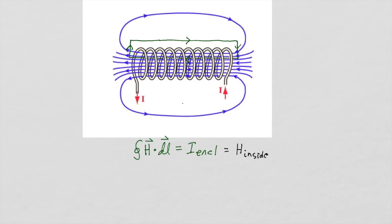Let's call the length of the coil L. When we're integrating the two ends, these path lengths are short and are pretty much perpendicular to the magnetic field, so H dot dL will essentially be zero and we can ignore the contributions from the two ends. Also the magnetic field intensity is very weak along the path outside the coil, so we're going to ignore it compared to the value of H dot dL inside the coil. So essentially the integral of H dot dL around that path will be the value of H inside the coil times the length of the coil.